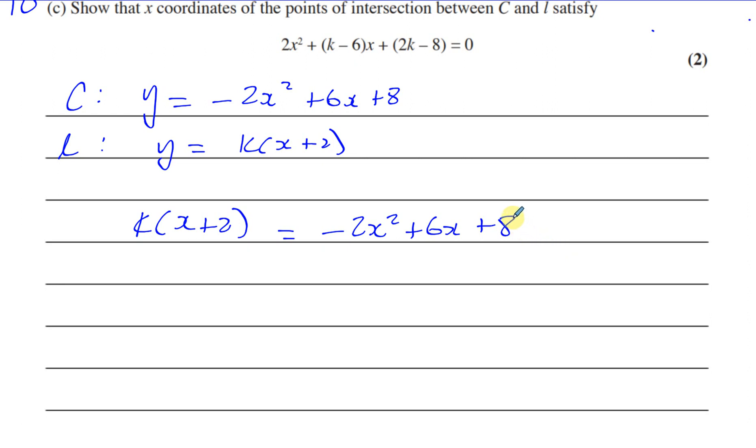So I could just say k times x plus 2 is equal to minus 2x squared plus 6x plus 8. One little point is, of course, much easier for me to use the equation in this form rather than the complete of the square form, because I'd have to simplify and expand and stuff. It's already done.